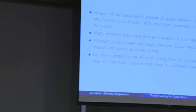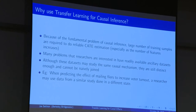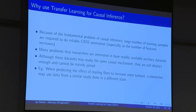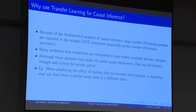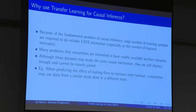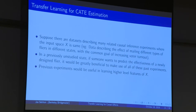I'll emphasize again: because causal inference involves unobservables — for every unit I don't observe status in both treatment and control, only one of the two — training is quite difficult, and it's true for all estimators. If I split data into training and validation, and get predictions for every individual, I can't just look at my validation set and calculate mean squared error to see how right I was, because for every individual I don't know what their treatment effect was. That's why transfer learning is particularly important in the causal inference space.